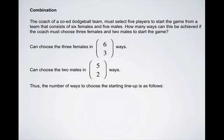So the number of ways we can choose the starting lineup is it's going to be the combination of six choose three times five choose two. And I'll explain why it's multiplication in just a second.